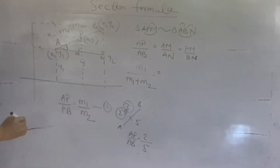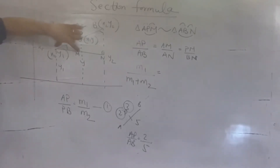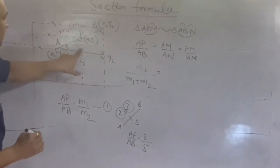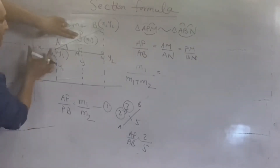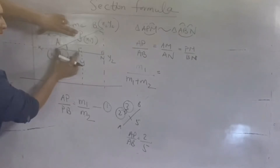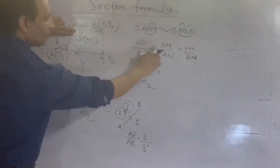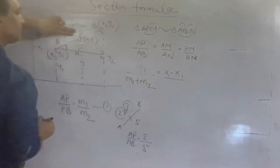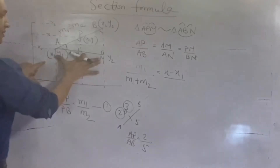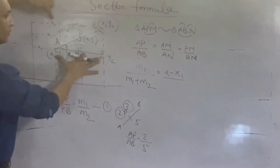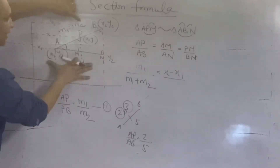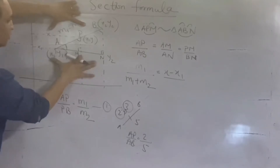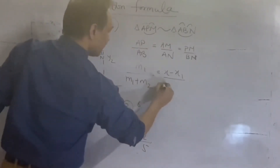AM की value देखना है — P point के coordinates X, Y हैं, मतलब ये पूरी distance X है। उसमें से X1 minus कर दें तो AM = X minus X1। AN देखना है — B तक पूरा X2 है, उसमें से X1 minus करें तो AN = X2 minus X1। तो ratio बन गया: M1 upon (M1+M2) = (X - X1) upon (X2 - X1)।